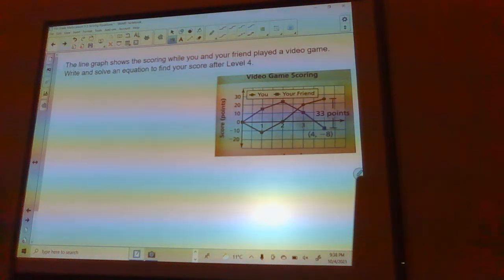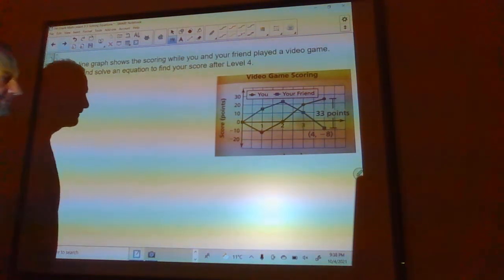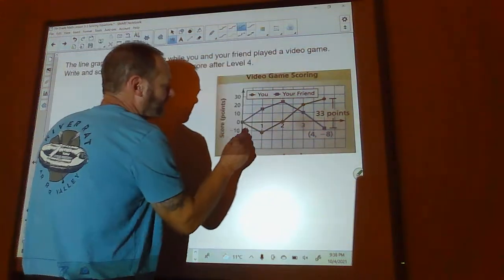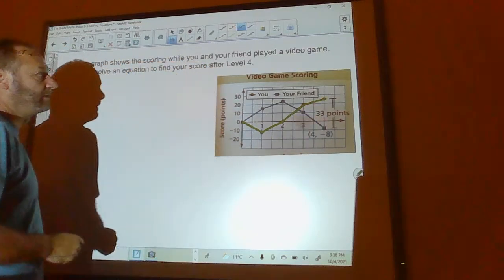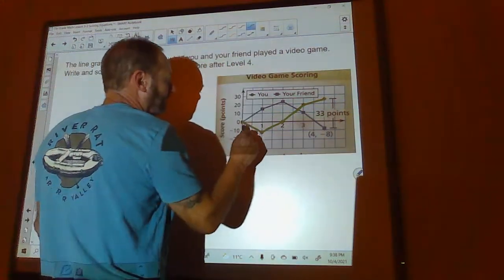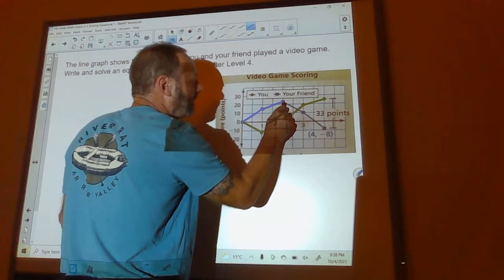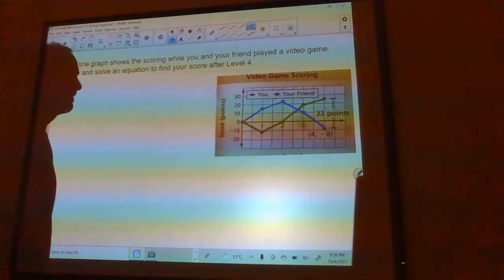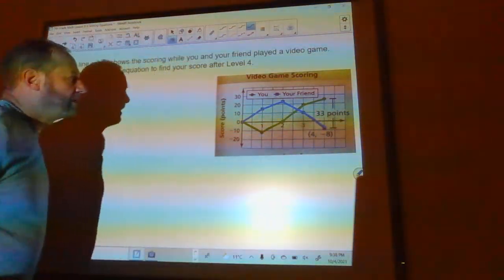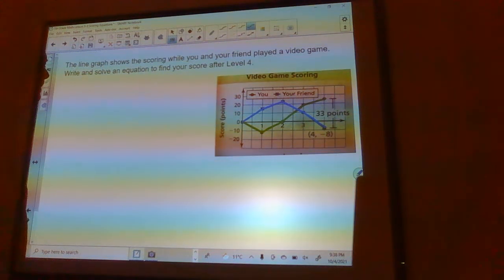The line graph shows the scoring while you and your friend played a video game. Write and solve an equation to find your score after level 4. So you're in green right here. Let's make this a little brighter. Just like that. And then here's your friend is in blue. And there's a difference of 33 points. So it looks like you beat your friend by 33 points.